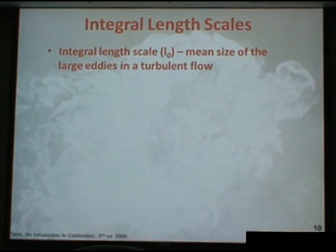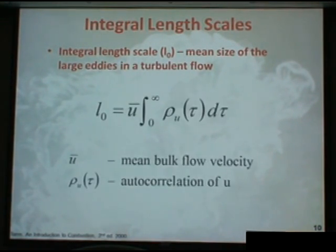Alright, we want to define what the integral length scale is. It's the mean size of large eddies in a turbulent flow. It's a simple definition. For the purposes of this talk, we'll go with that. And it can be calculated using this equation where we look at the mean bulk flow velocity and we do the autocorrelation of the flow velocity. So including the fluctuation term, autocorrelation is another statistical method that I'm not going to go into here.